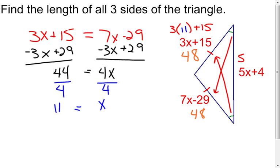So if I take my 5, put my 11 in here for X, and then add on the 4, we find out that that side is going to be 55 plus 4, which puts me at 59.